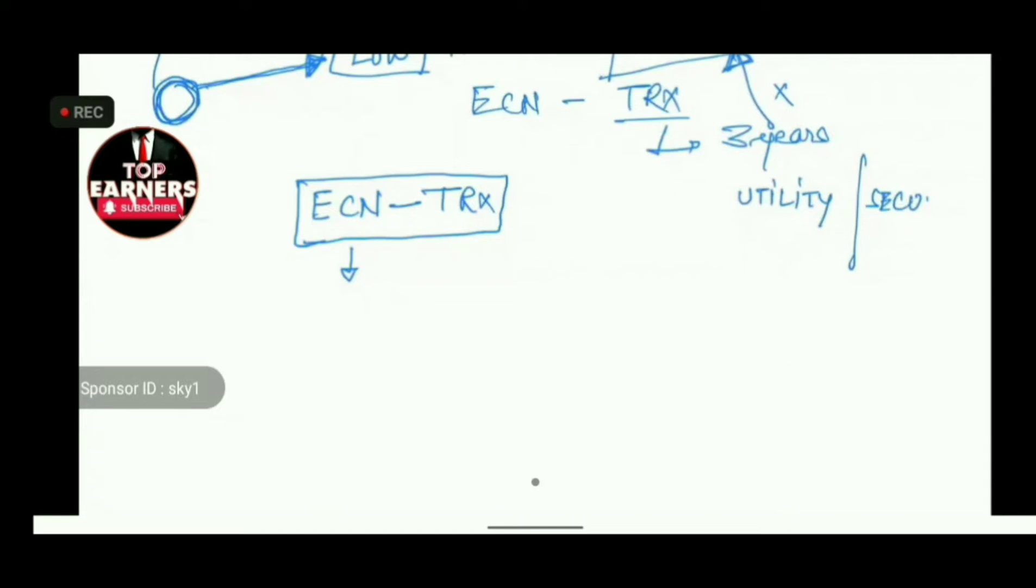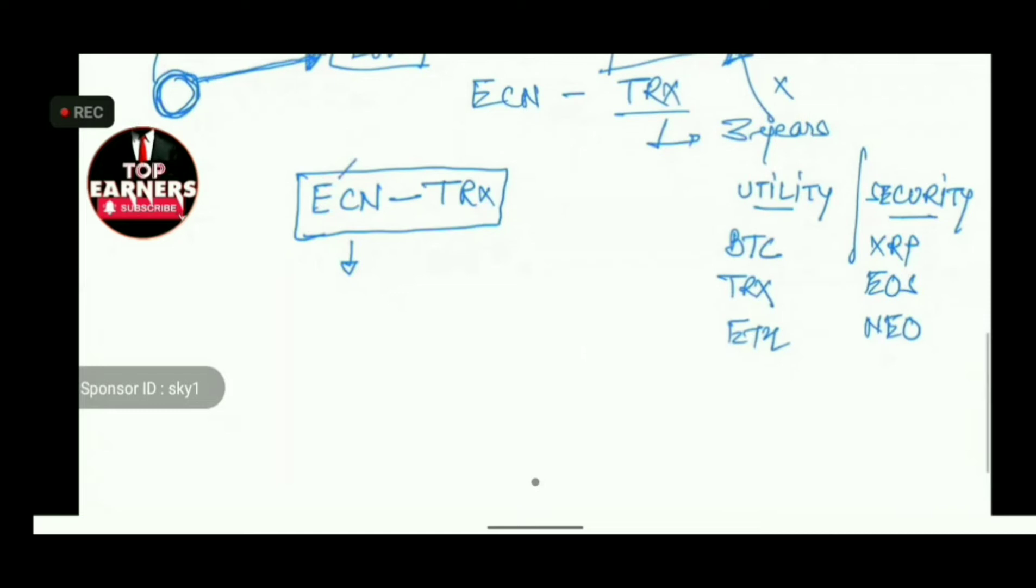Let's say Bitcoin is utility, XRP, EOS, NEO, TRX, ETH. So these are two sectors. What is ECN? ECN comes under utility, not security. It is a utility token. And what is the utility? It is the coin for...